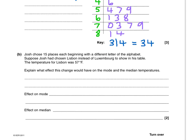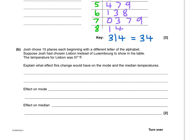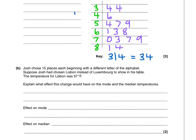Part B. Josh chose 15 places each beginning with a different letter of the alphabet. Suppose Josh had chosen Lisbon instead of Luxembourg. The temperature for Lisbon was 57 degrees Fahrenheit. Explain what effect this change would have on the mode and median temperatures.